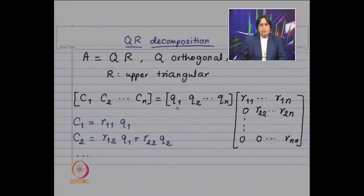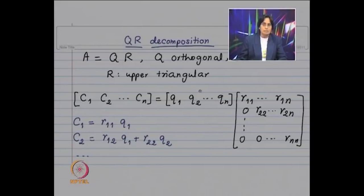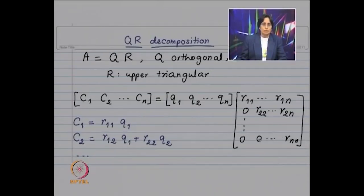That means each column vector has Euclidean norm equal to 1, and considering the standard inner product on R^n, the inner product of Qi with Qj will be 0 if i ≠ j. For simplicity, we are assuming A to be a real invertible matrix. R being upper triangular means below the diagonal all the entries are equal to 0.